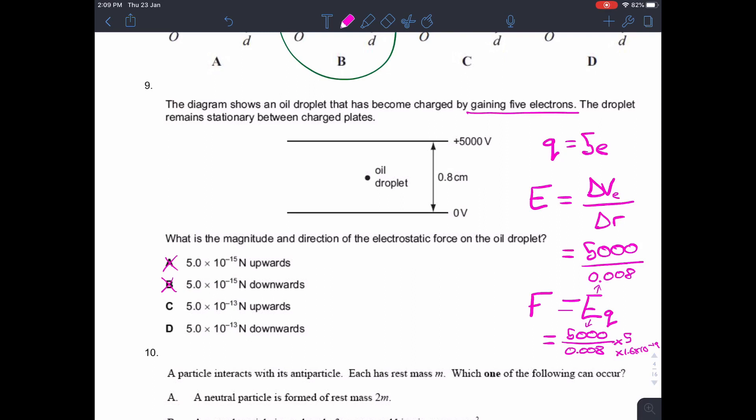And now we need to figure out if it's up or down. Well, the oil droplet has gained five electrons, so that must be a negatively charged oil droplet. And so a negatively charged oil droplet is going to be attracted to this positive plate and repelled... And not repelled, because it's zero volts, so it's only going to be attracted from this positive plate. If it's attracted to the positive plate, the force is going to be upward, so it must be C.